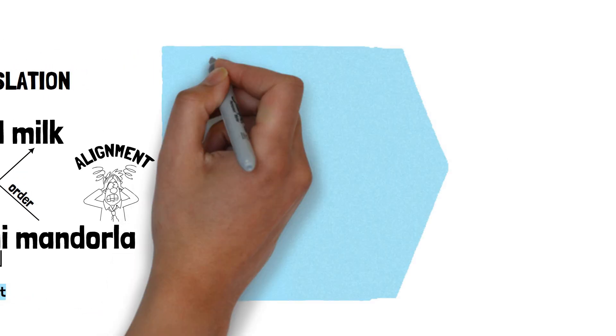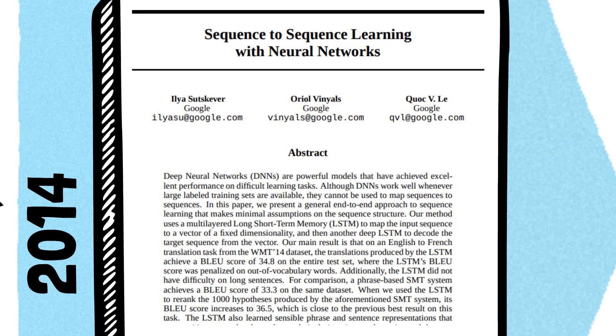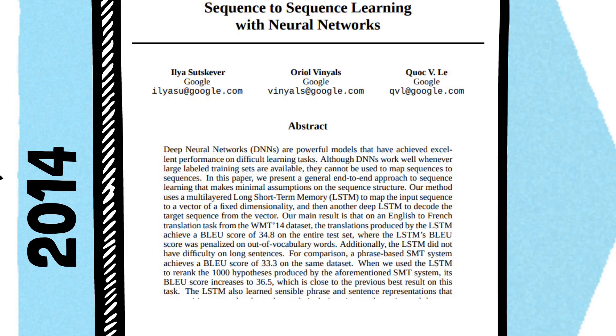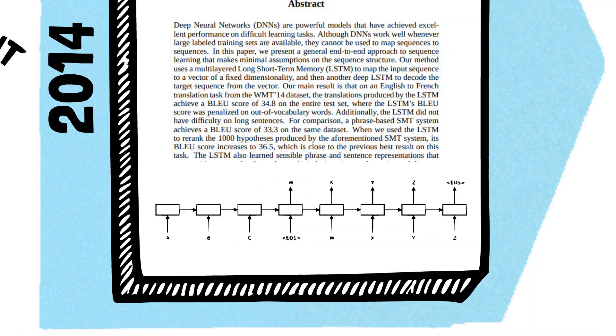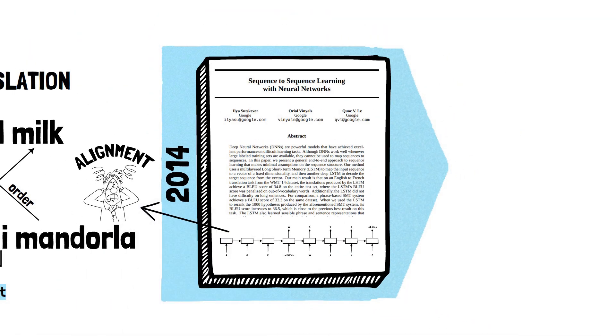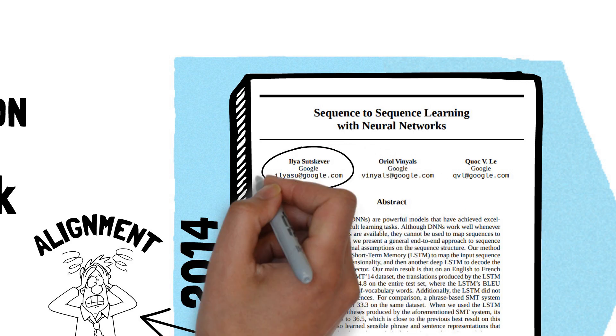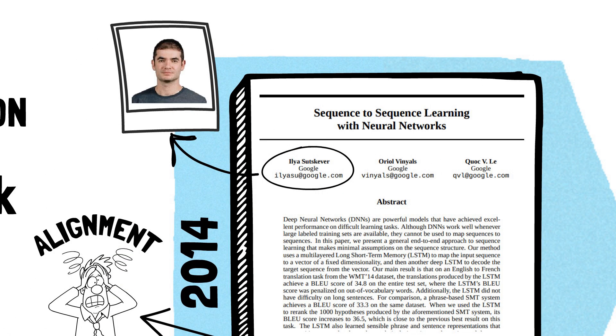A 2013 paper named Sequence-to-Sequence Learning with Neural Networks proposed a general RNN architecture to tackle exactly this alignment challenge. One of the main authors was Ilya Sutskever, who's one of the core scientists behind ChatGPT.